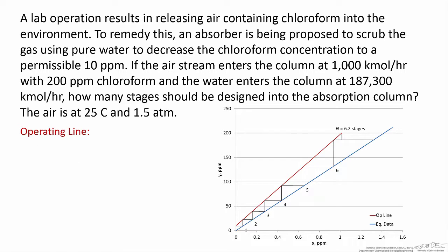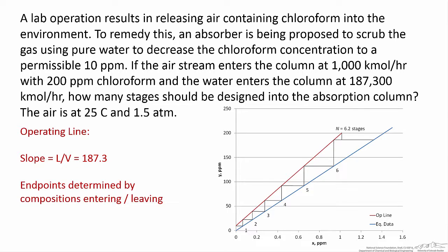Now we turn our attention to the operating line. The slope of the operating line is just the ratio of the liquid flow rate to the vapor flow rate, and we've been given both in the problem statement. So the slope, L over V, is going to be 187.3. We can then use the compositions entering and leaving the system to fully define the operating line.